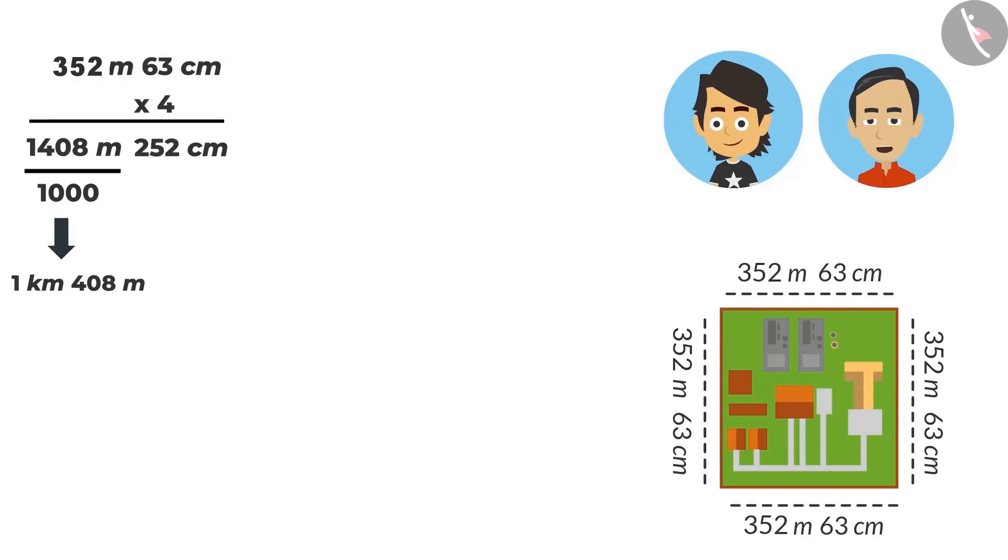But Ayushman, the value in centimetre is also more than 100. Don't you think it can be written in metres too? Oh yes, it can be written. Then what are you thinking? Write it down. To convert the value in centimetres to metres, one has to divide it by 100. And 252 divided by 100 will be 2 metres, 52 centimetres.